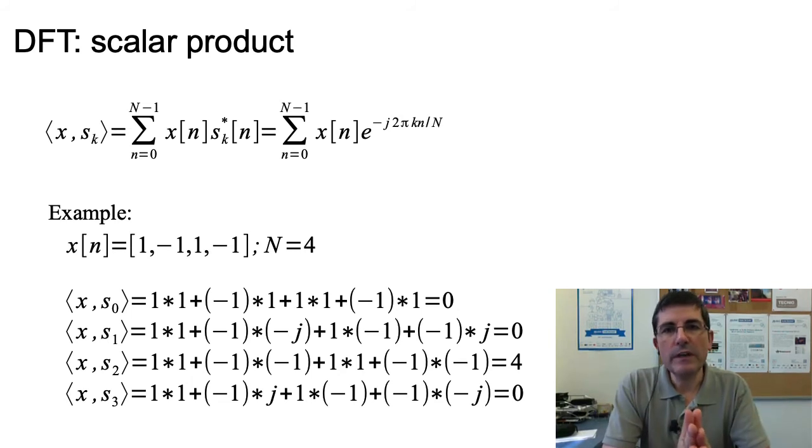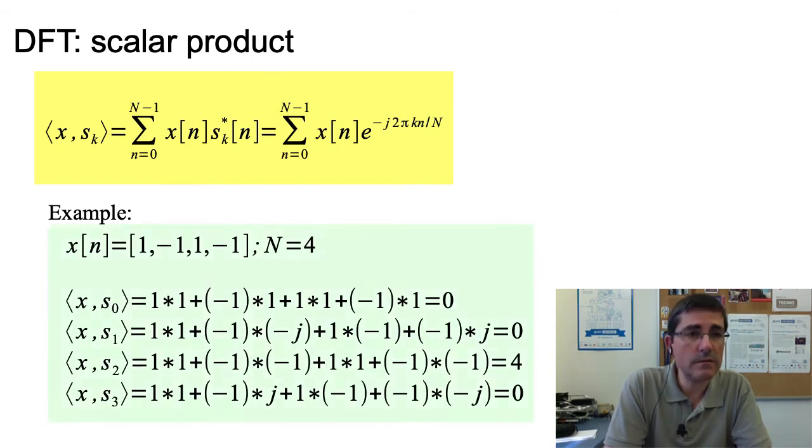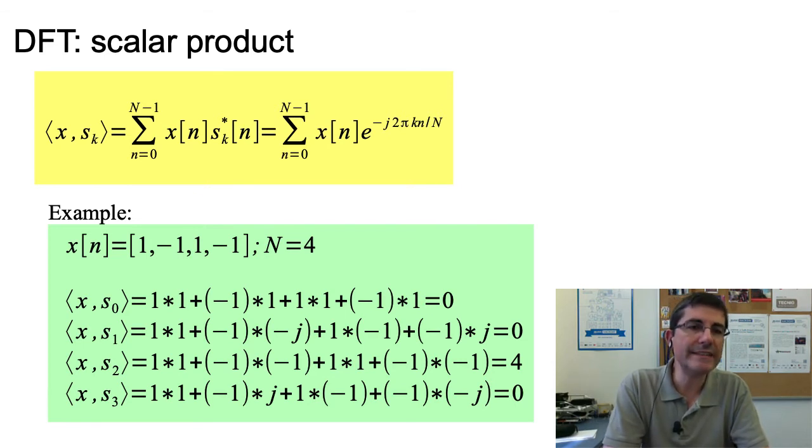So the DFT equation can also be expressed by this equation, which emphasizes the idea of a scalar product, in which we are doing the scalar product of x[n], our input signal, by the N complex exponentials. And, if we put an example of, we take, again, size N=4, and we take a signal of being these 4 samples, [1, -1, 1, -1],